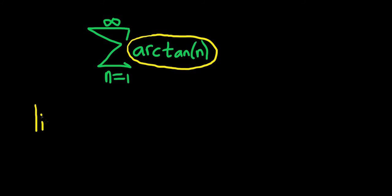Let's try it. Let's take the limit as n goes to infinity of that piece there, of the arctangent of n. So if we get 0, the test fails. This is called the n-th term test. If we don't get 0, then we know it diverges.